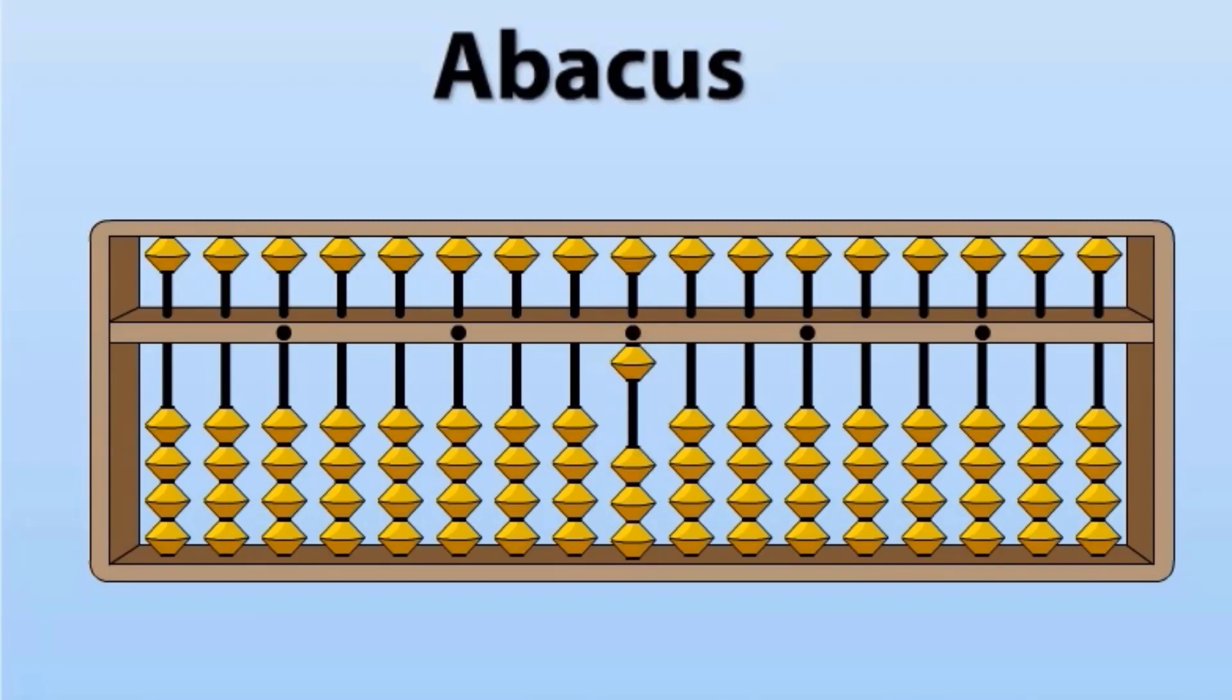Here, this is 1. Now this is 2. When 3 beads touch value bar, this is 3. This is 4. When we bring upper bead down, it has value 5. Now this is 5.